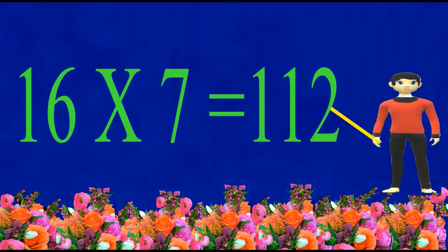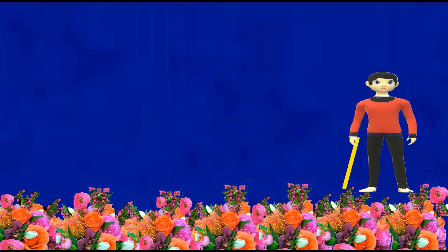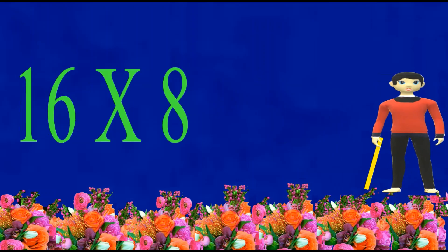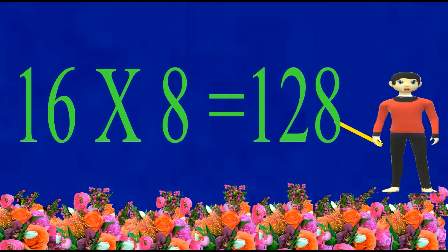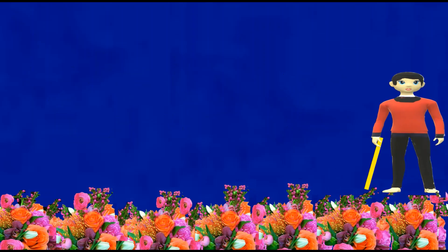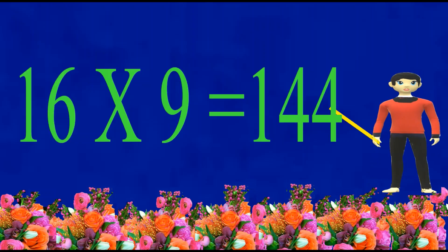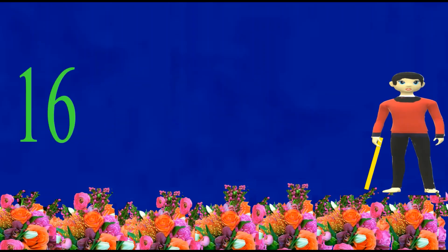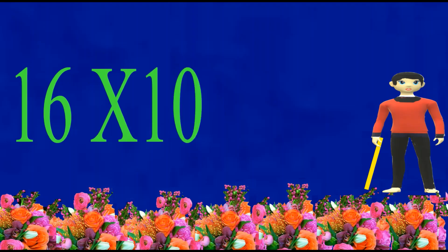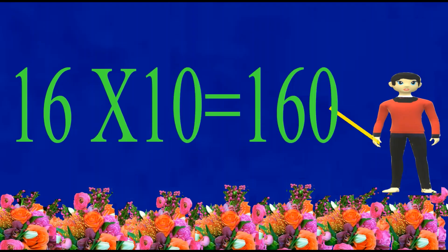Sixteen sevens are one hundred and twelve. Sixteen eights are one hundred and twenty-eight. Sixteen nines are one hundred and forty-four. Sixteen tens are one hundred and sixty.